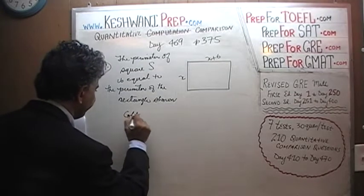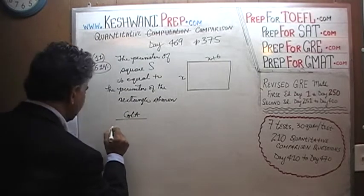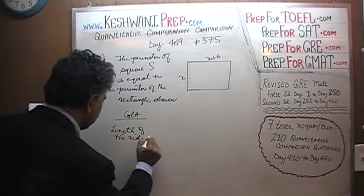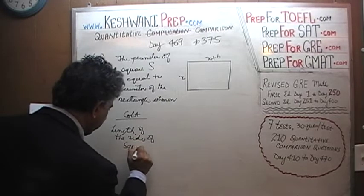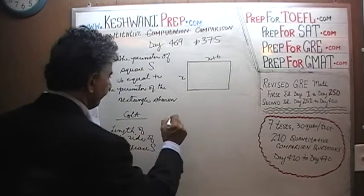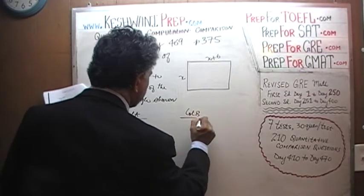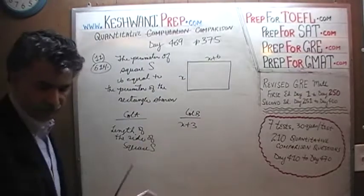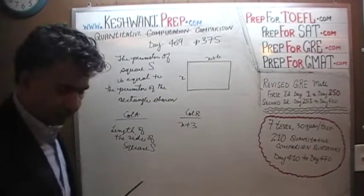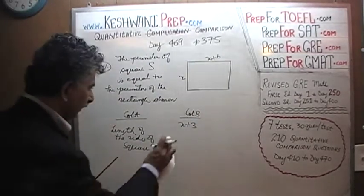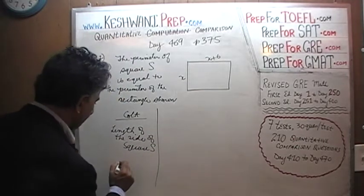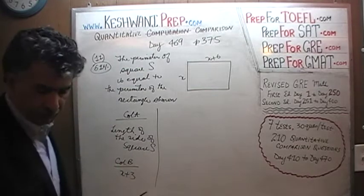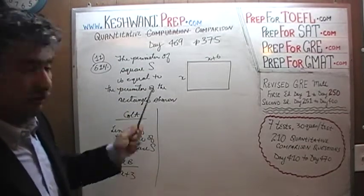What we are being asked to compare: in column A, we have the length of the side of square S, versus column B, which is x plus 3. The perimeter of this rectangle is the same as the perimeter of the square.